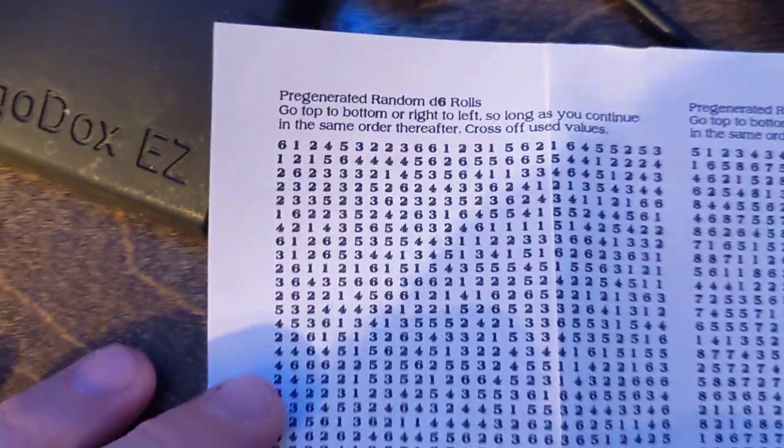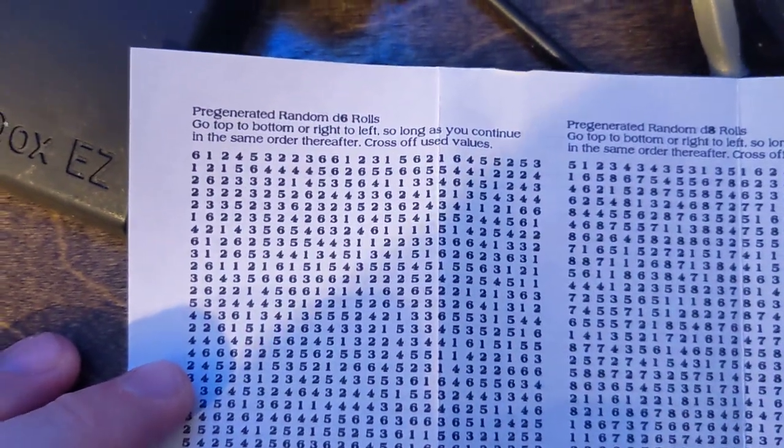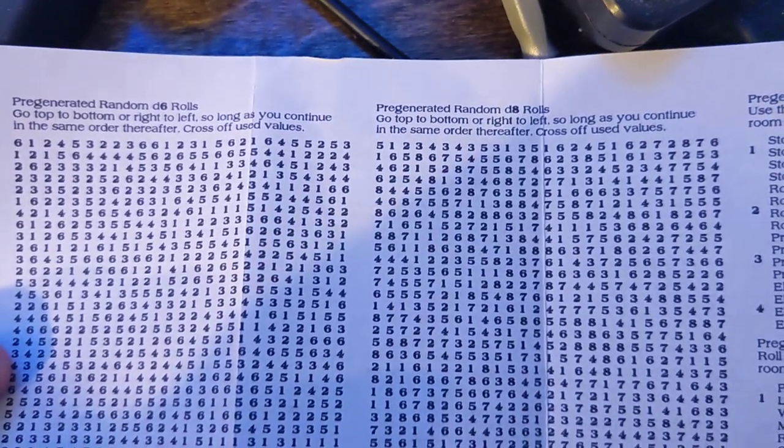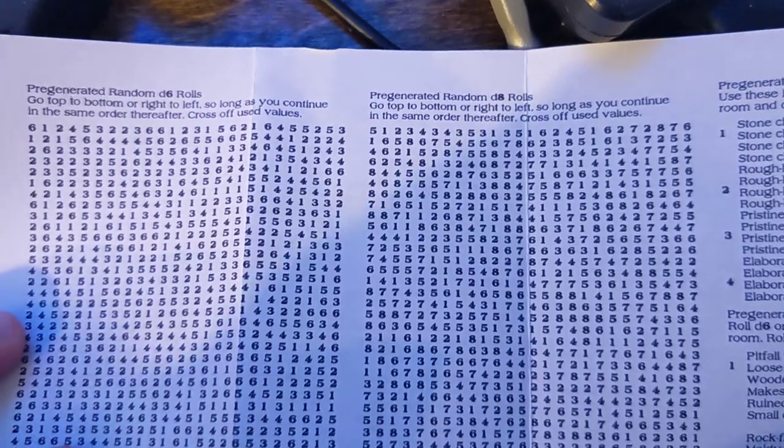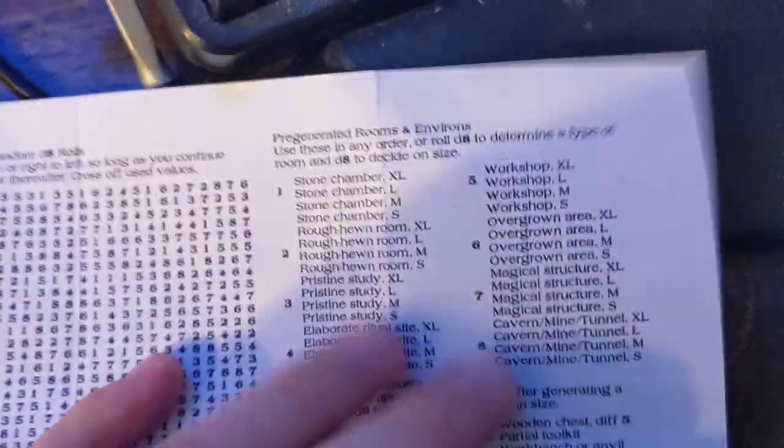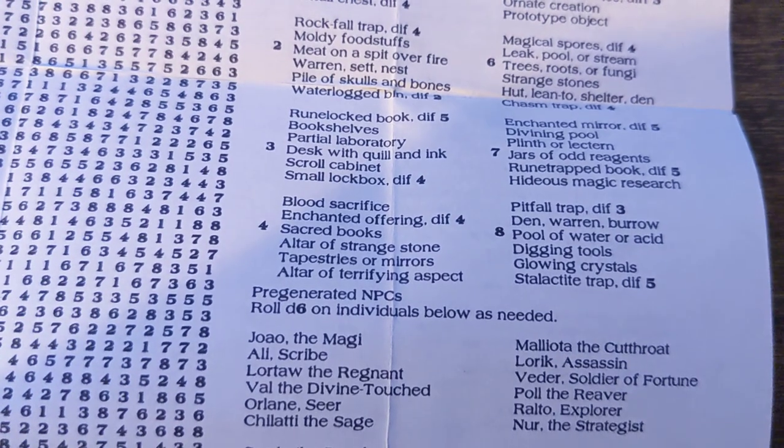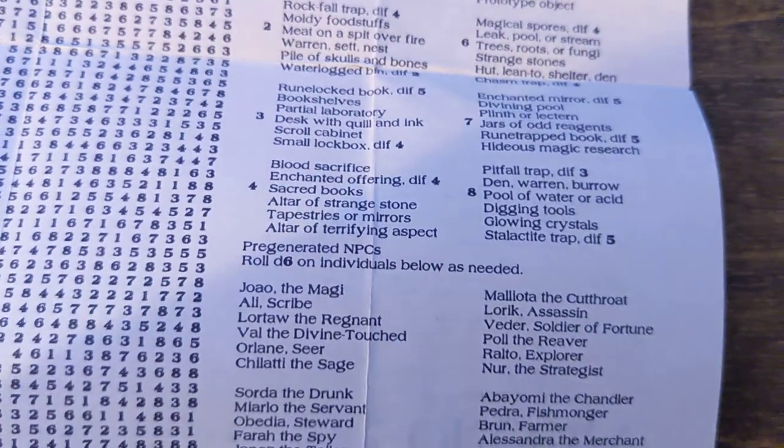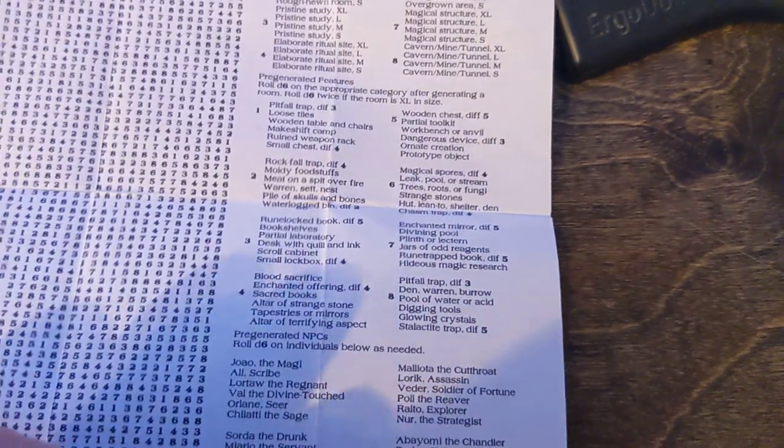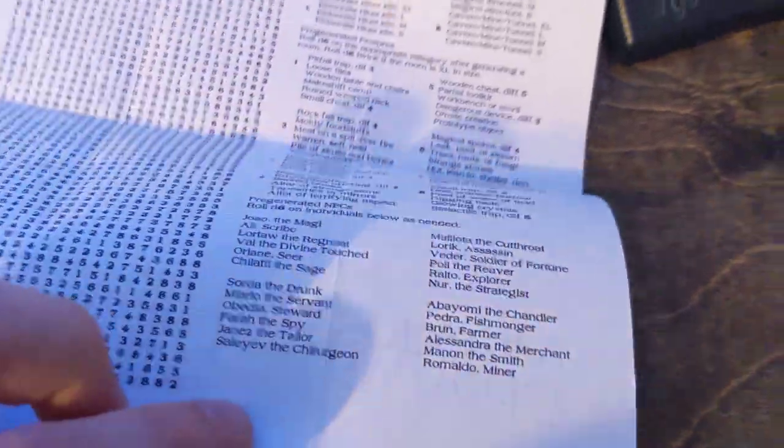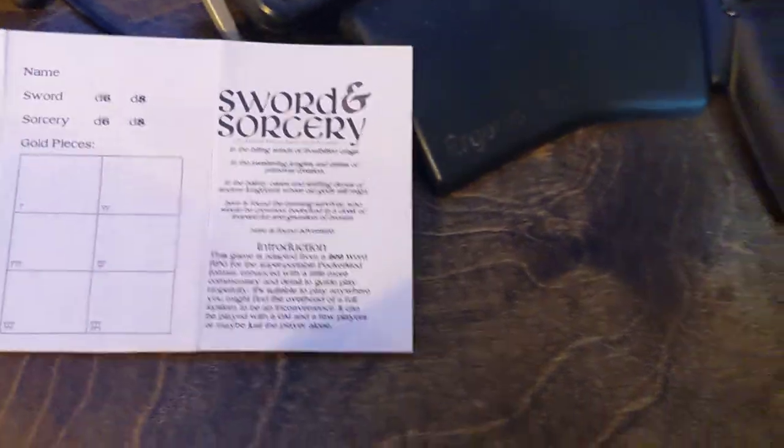What is this shit here? What do we got? We got pre-generated random d6 rolls, this is pretty neat. Pre-generated random d8s, that's cool. And then over here we got pre-generated rooms and environments, features. Look at this one right here, blood sacrifice, enchanted offering, sacred books, altar strange tome. This is rules, okay? This is my shit right here.